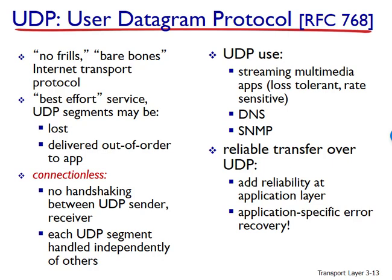Third: no connection state. TCP maintains connection state in the end systems, including receive and send buffers, congestion control parameters, and sequence and acknowledgement number parameters. This state information is needed to implement TCP's reliable data transfer service and to provide congestion control. UDP, on the other hand, does not maintain connection state and does not track any of these parameters. For this reason, a server devoted to an application can typically support many more active clients when applications run over UDP rather than TCP.